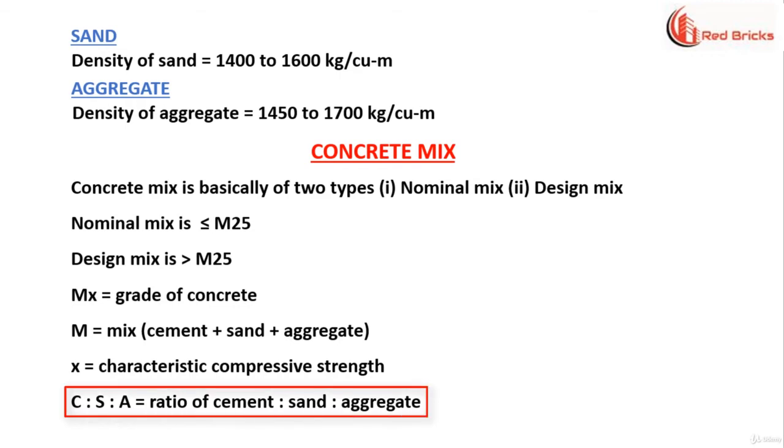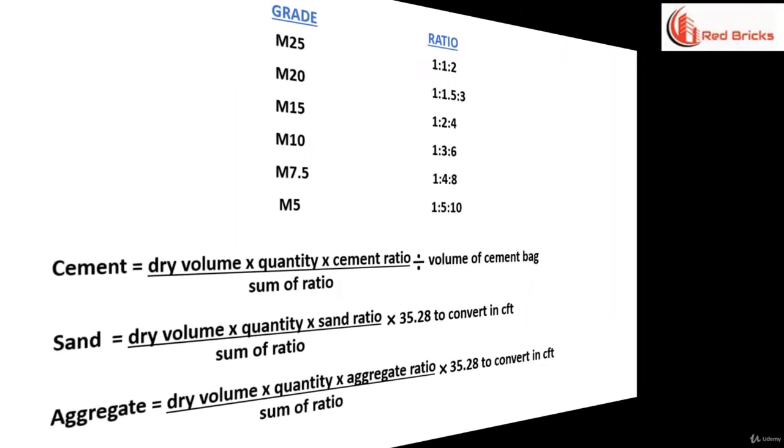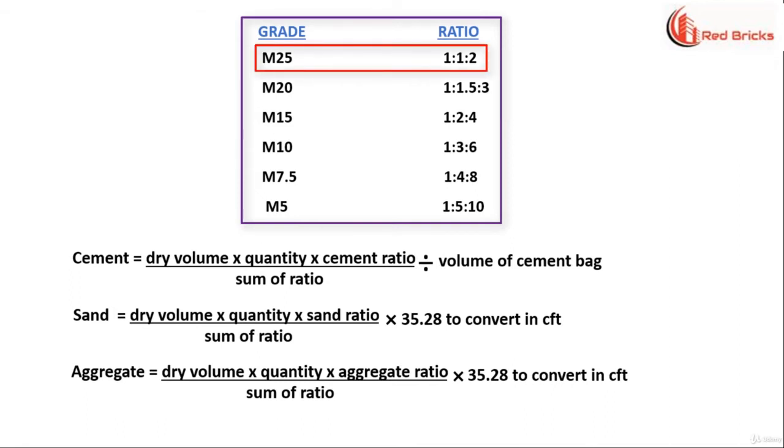C is to S is to A is the ratio of cement, sand and aggregate respectively. Here we have the grade and respective ratios. For grade M25, the ratio is 1 is to 1 is to 2 and for M20, the ratio is 1 is to 1.5 is to 3 and so on.